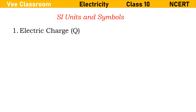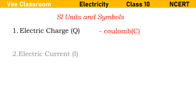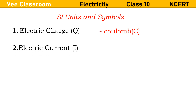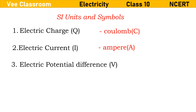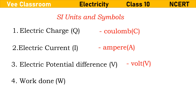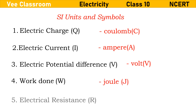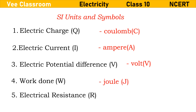Electric charge: coulomb. Electric current: ampere. Electric potential difference: volt. Work done: joule. Electrical resistance: ohm.